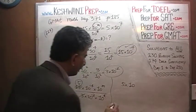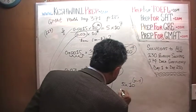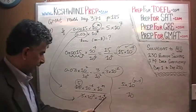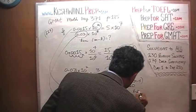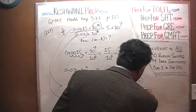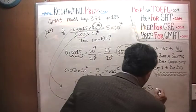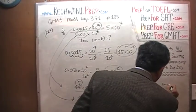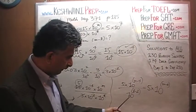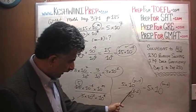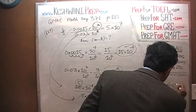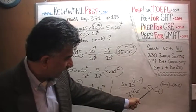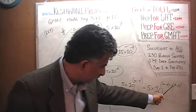Let's write the numerator exponent as M minus 4, and the denominator exponent as K minus 2. That in turn can be written as 5 times 10 raised to M minus 4, over 10 raised to K minus 2. Bringing the denominator up makes its exponent negative, giving us 5 times 10 raised to M minus 4, minus the quantity K minus 2.